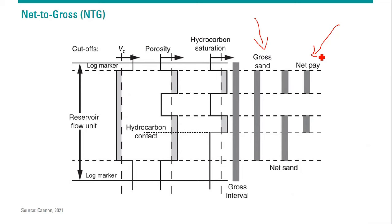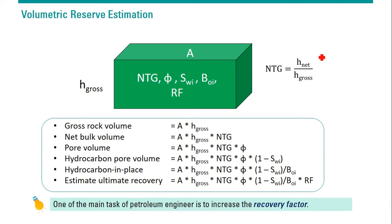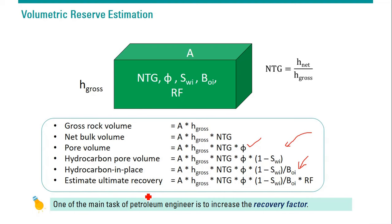Considering all the data, you know the gross rock volume — area multiplied by thickness. Then net bulk volume is area times thickness multiplied by net to gross, and then porosity. Pore volume equals gross thickness times net to gross times porosity. For hydrocarbon pore volume, multiply by one minus water saturation — so one minus water saturation is hydrocarbon saturation. Then hydrocarbon in place is divided by BOI, the initial formation volume factor.